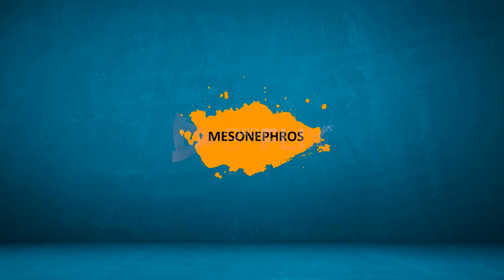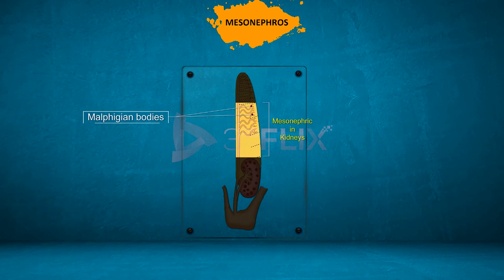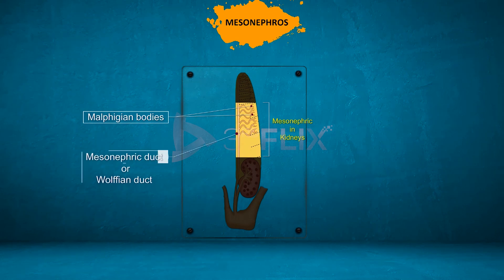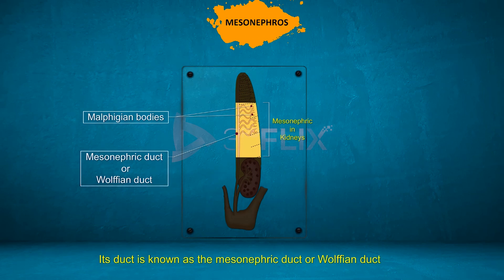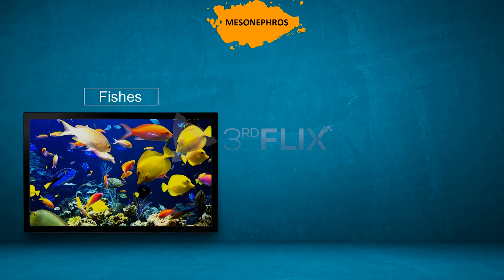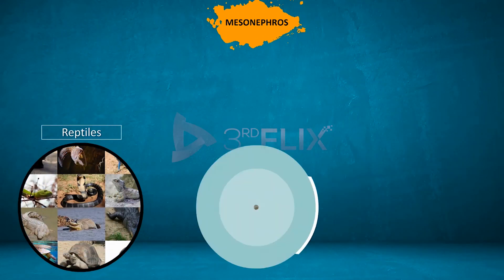Mesonephros: the mesonephros is formed posterior to the pronephros soon after its degeneration. The glomeruli are enclosed in capsules, forming the Malpighian bodies. The mesonephros is also known as the Wolffian body, and its duct is known as the mesonephric duct or Wolffian duct. In fishes and amphibians, the mesonephros is functional in both the embryos and the adults.